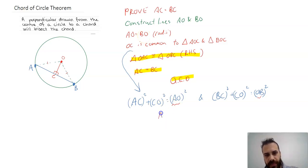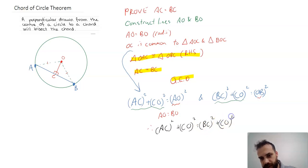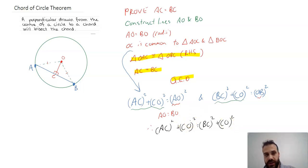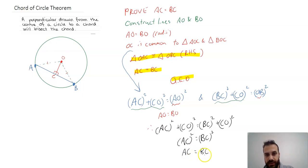We already know that AO and OB are equal because they're radii — AO equals BO. Therefore, if AO squared equals OB squared, then all of this must equal all of that. So we can say AC squared plus CO squared equals BC squared plus CO squared. There's a CO squared on both sides, so we subtract CO squared from both sides. That leaves AC squared equals BC squared, and therefore AC equals BC because we can take the square root of both sides. QED.